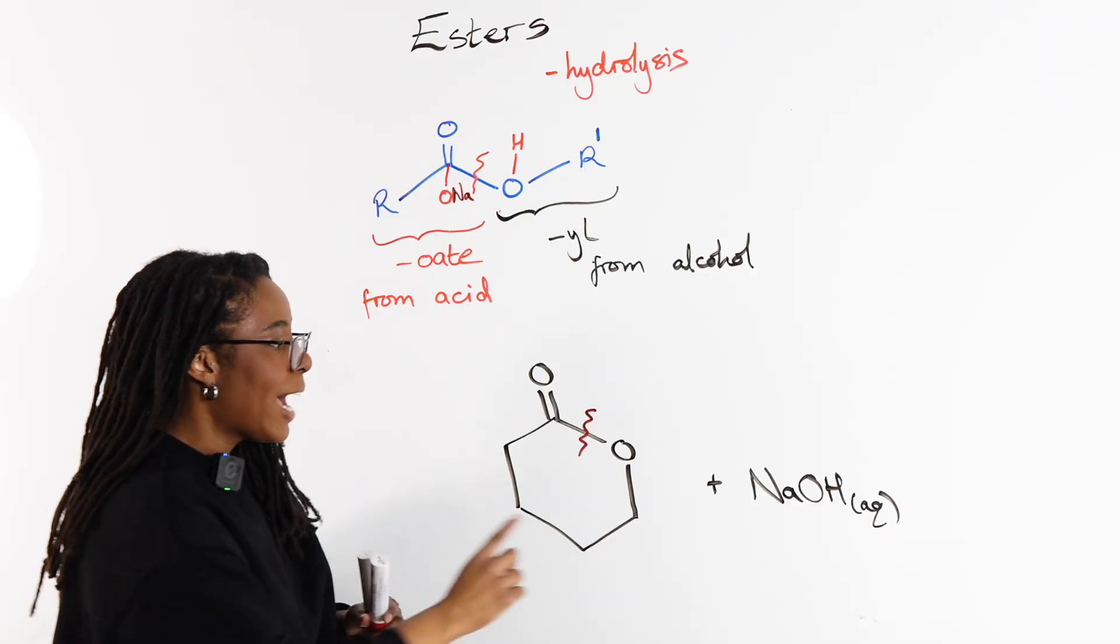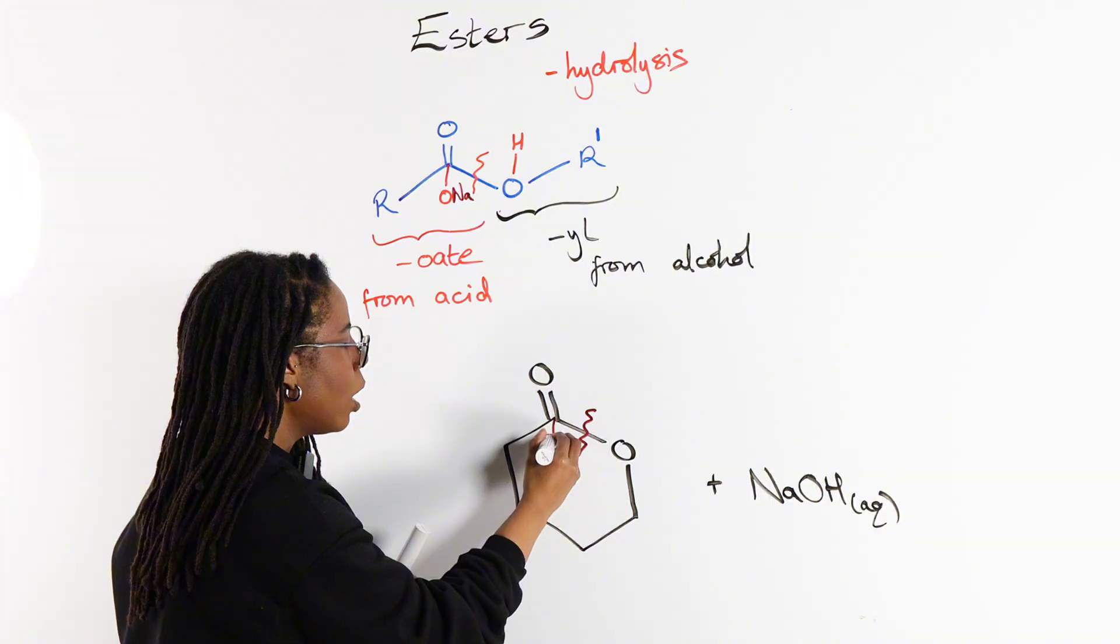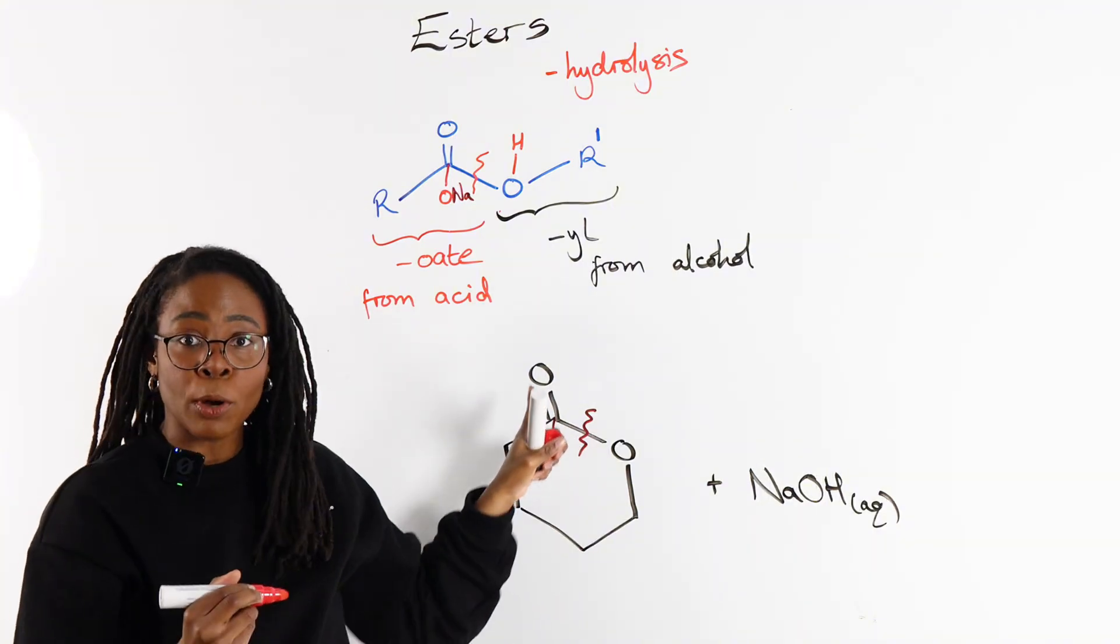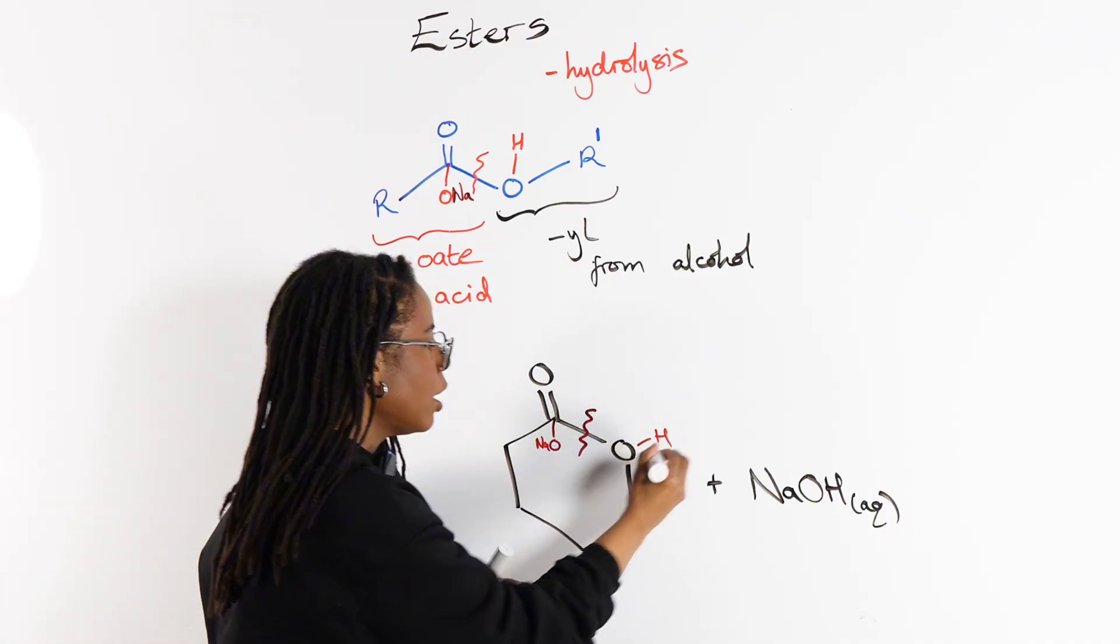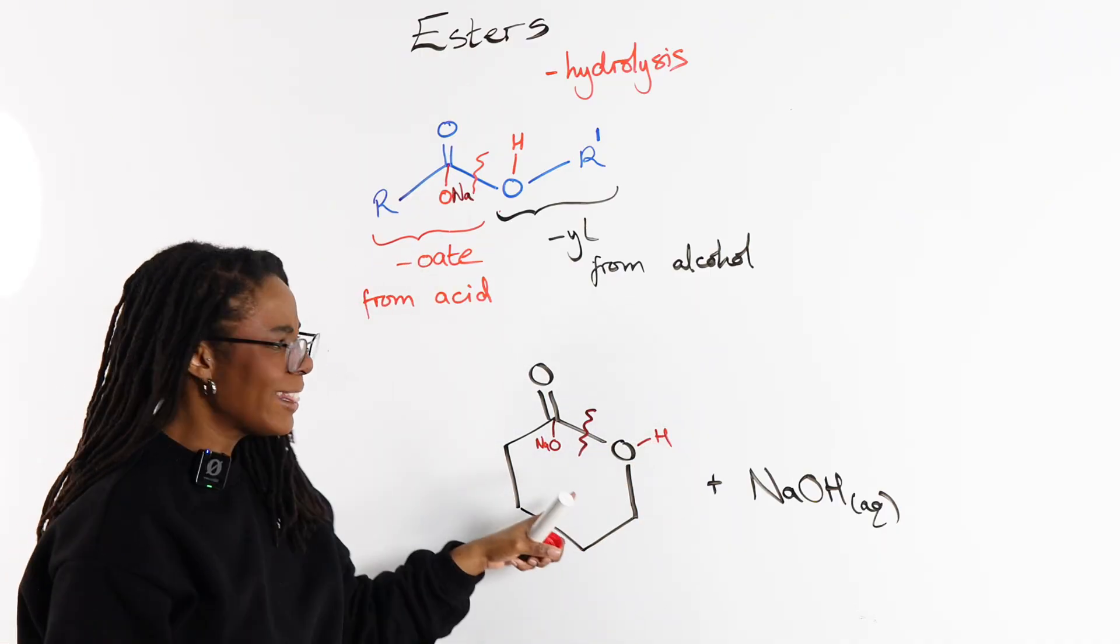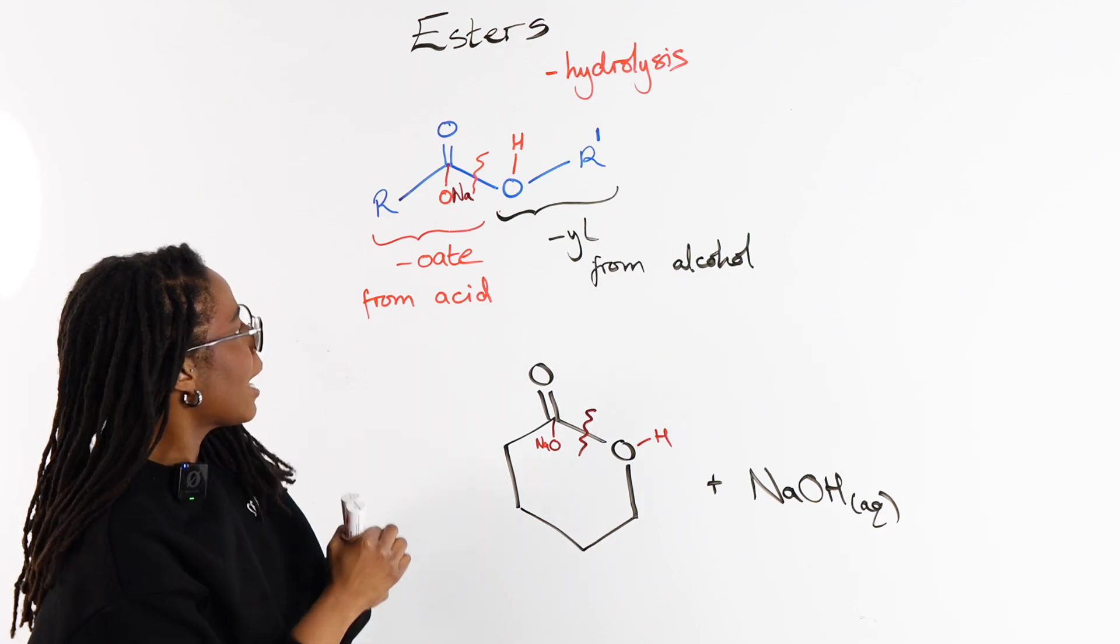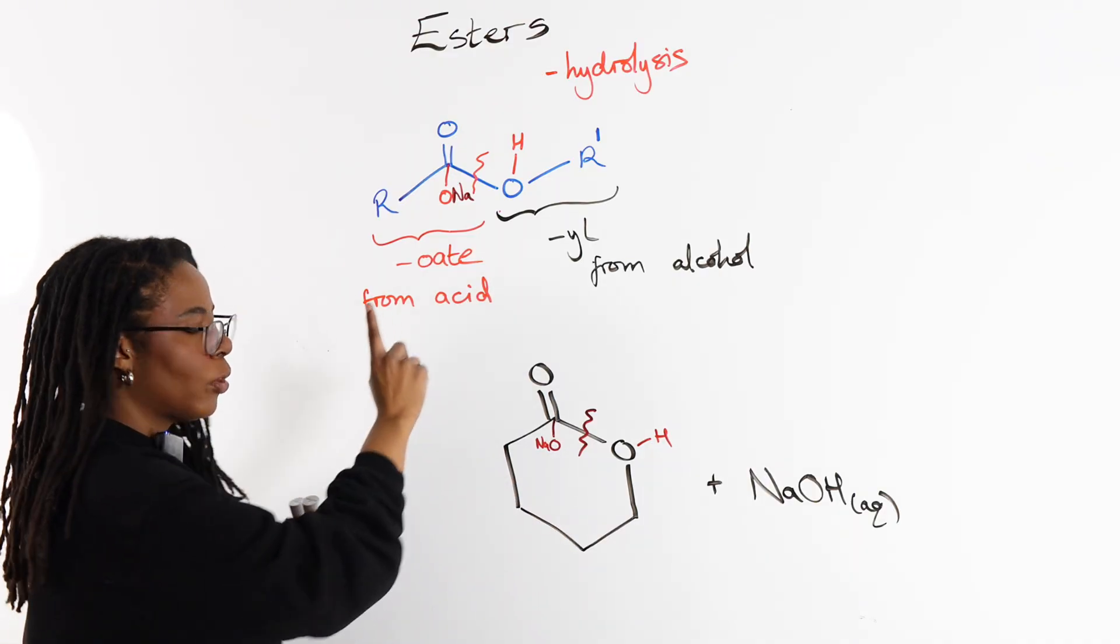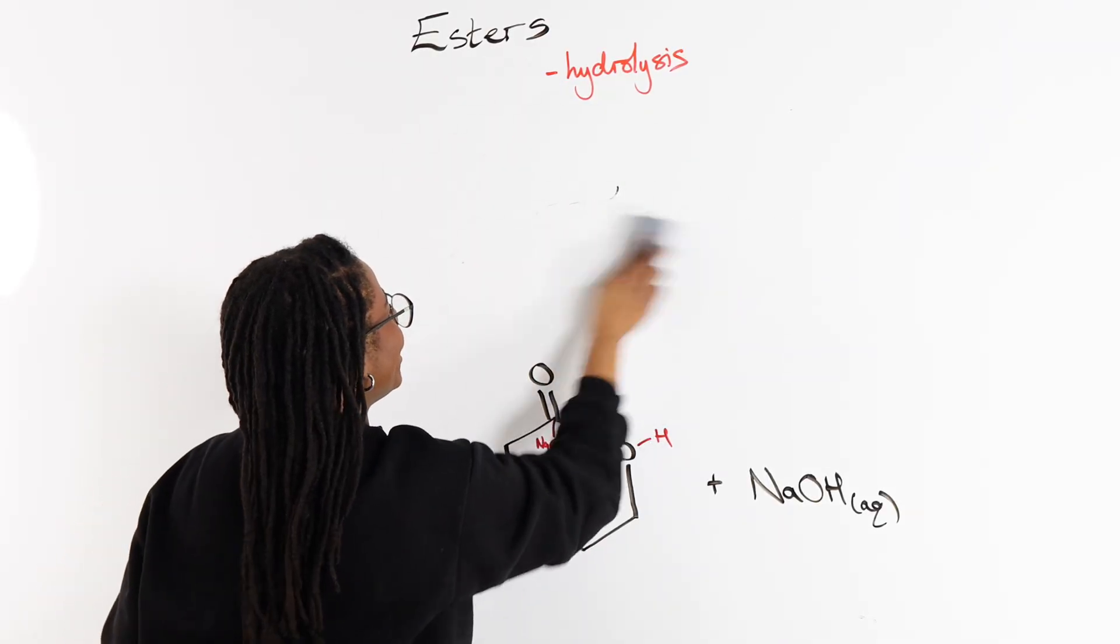Now because we are in basic conditions, we are going to give the ONa back to the C double bond O bit—that's the O8—and then we're going to give the H back to the alcohol bit. And then we just open this up. So what will we get as our final product?